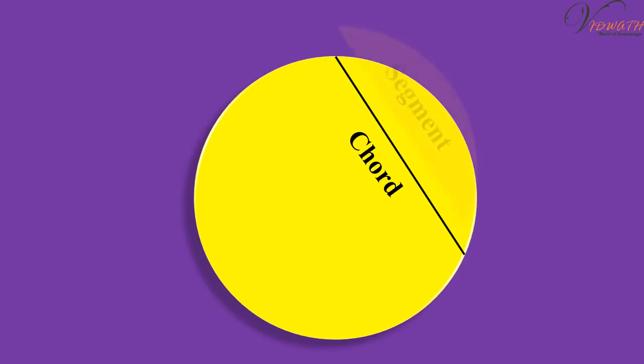You have also studied various terms related to a circle like chord, segment, sector, arc, etc. Let us now examine the different situations that can arise when a circle and a line are given in a plane.